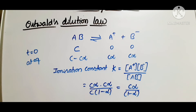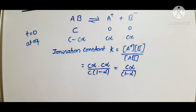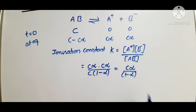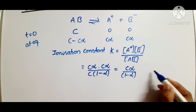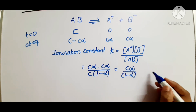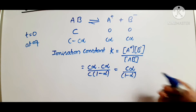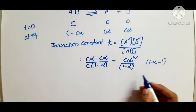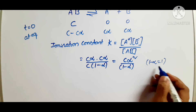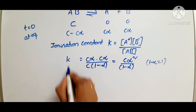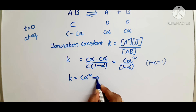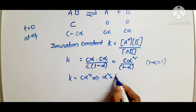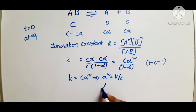Since this is a weak electrolyte, α is very small compared to 1. So (1 − α) can be approximated as 1. Therefore, Ka = C·α², which gives α² = Ka/C, and so α = √(Ka/C).